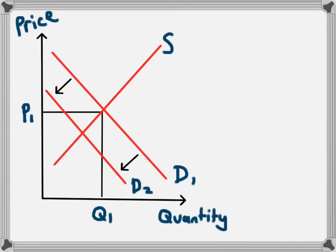The original equilibrium point of P1 and Q1 will now move to here. The change in the demand curve will lead to a decrease in the price and a decrease in the quantity that is bought and sold. As a result business revenue will also fall.